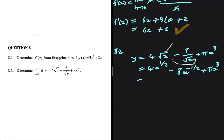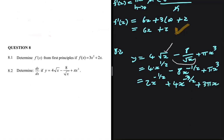Applying the power rule: 4 times 1/2 gives 2x to the power 1/2 minus 1, which is minus 1/2. Then minus 8 times minus 1/2 gives plus 4x to the power minus 1/2 minus 1, which is minus 3/2. Plus pi times 3 gives 3 pi x to the power 2. So there we have our final answer.